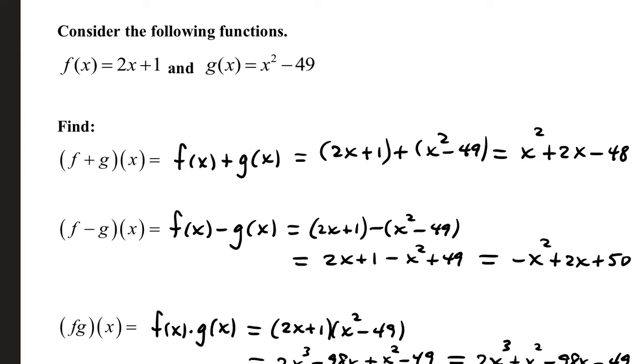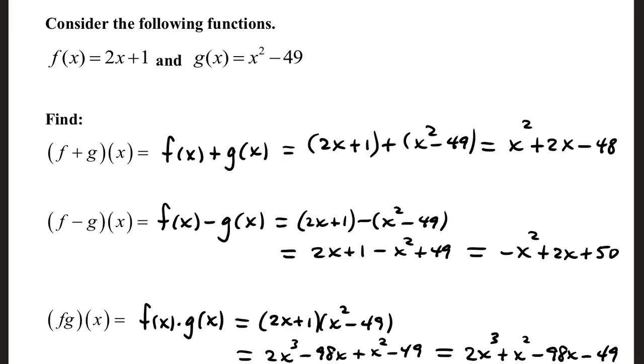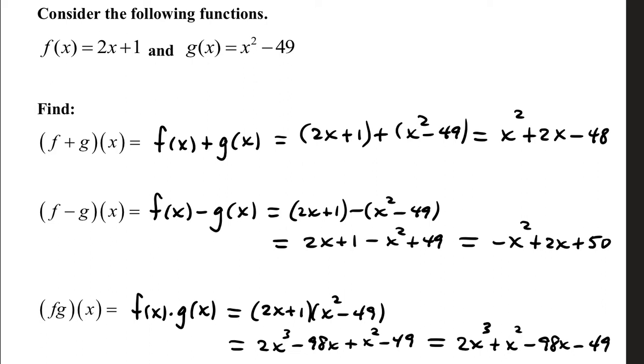In our second example, function f is a linear function, 2x plus 1. g of x is a quadratic function, x squared minus 49. Starting with addition: f plus g, we take function f, add the like terms of function g to it. 2x plus 1 plus x squared minus 49. That's x squared plus 2x. Combining the constants, that's negative 48. So here is the sum of those two functions.